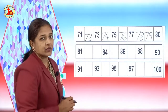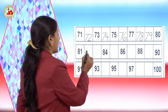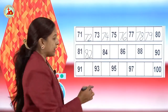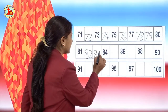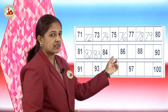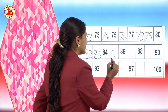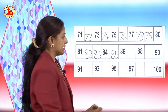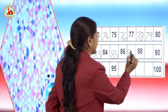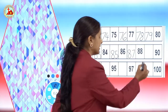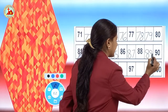After 80, 81 — it is written. After 81, 82. The next missing number after 82 is 83. Next is 84 — it is written. Next missing number is 85. 86 is written. Then 87. 88 is written. After 88, 89. Then 90 is written.